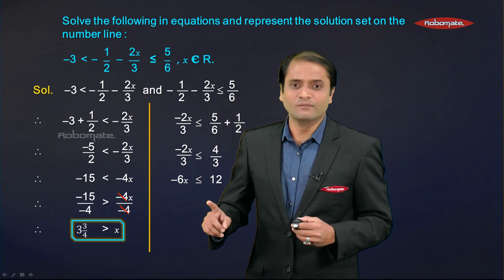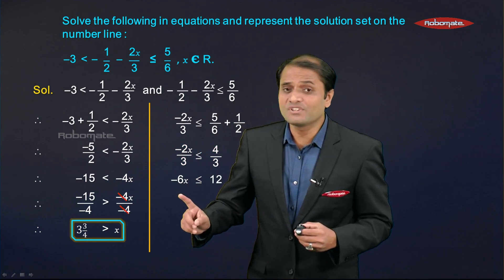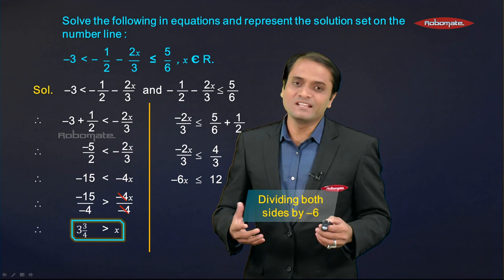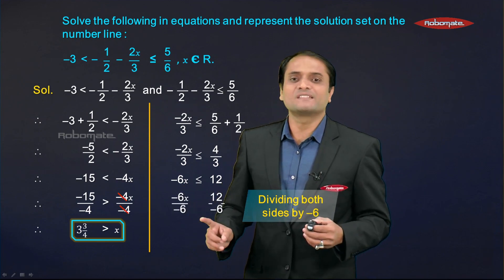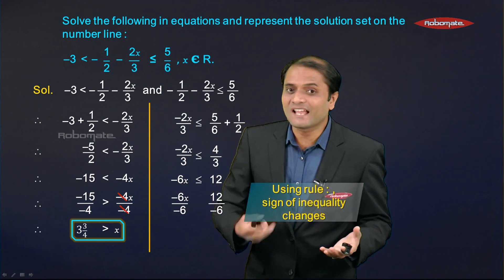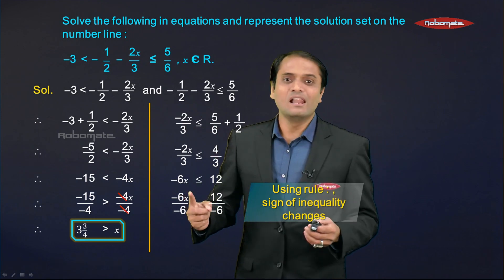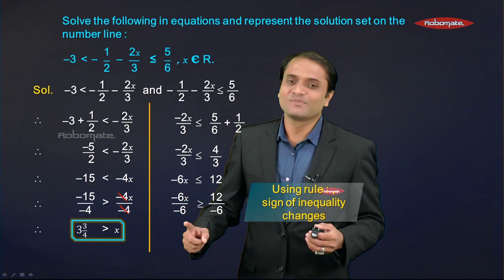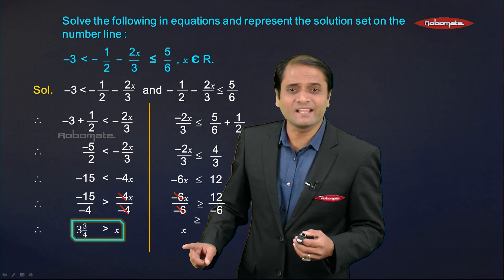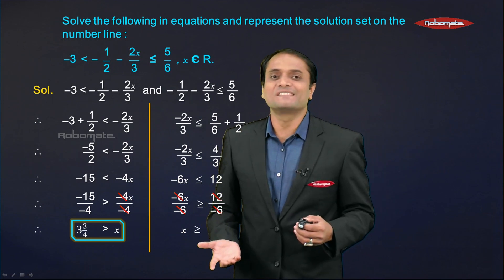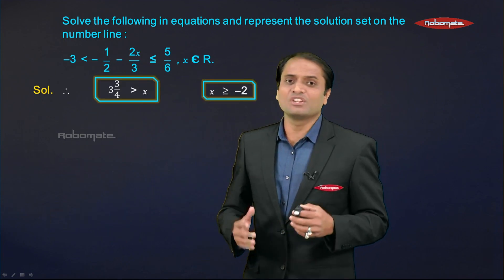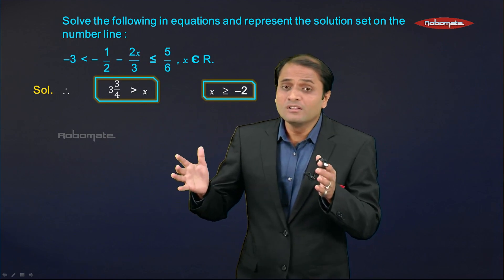To solve further, divide both sides by −6. Since we are dividing by a negative number, the inequality sign gets reversed: less than or equal to becomes greater than or equal to. On the LHS, −6x ÷ −6 = x. On the RHS, 12 ÷ −6 = −2. So the final answer of the second inequation is x ≥ −2.